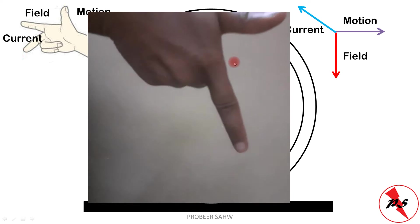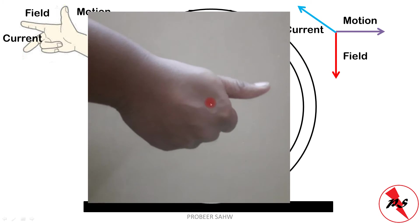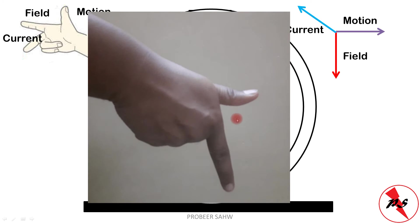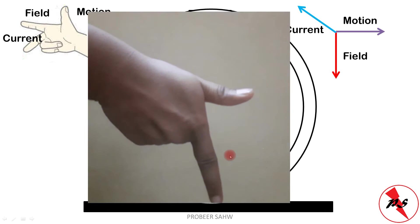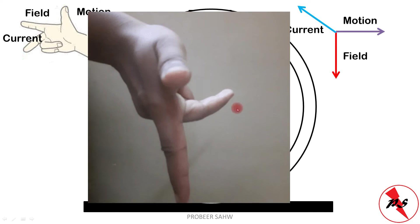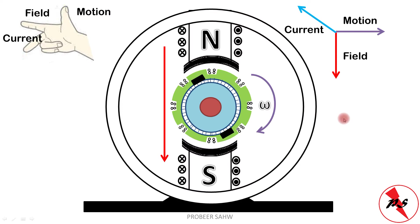The direction of motion is to the right, the magnetic field is downwards, and therefore the current flows inward — represented by a cross symbol. The other armature conductors also near the north pole experience the field in the same direction, with motion in the same direction, so their current also flows into the screen.